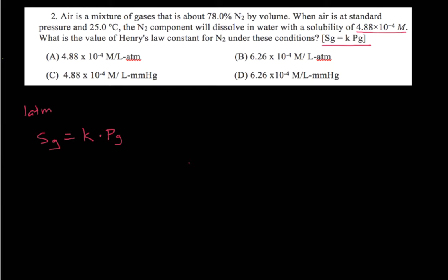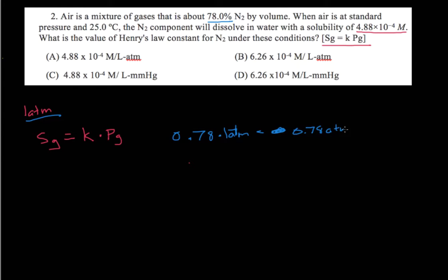Now that we have our basic equation, we can start plugging things in. To get the partial pressure, we know it's 78% nitrogen, so we have 0.78 times standard pressure of 1 atmosphere, which equals 0.78 atmospheres. This is our partial pressure of the gas.